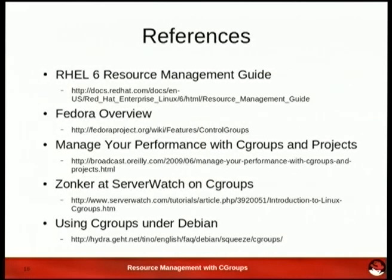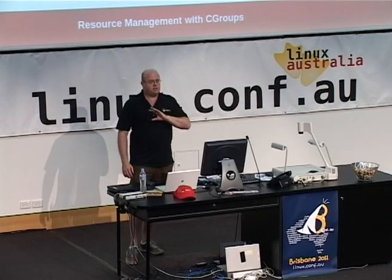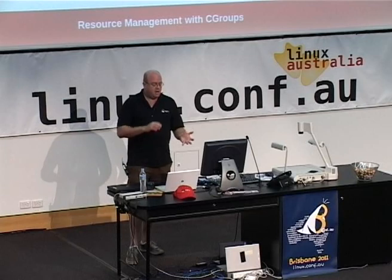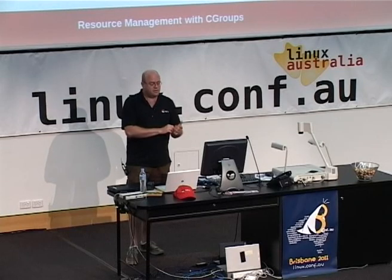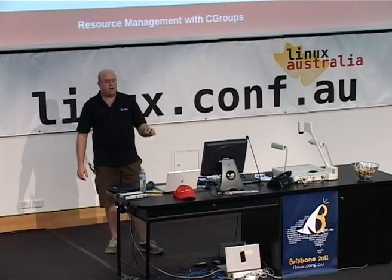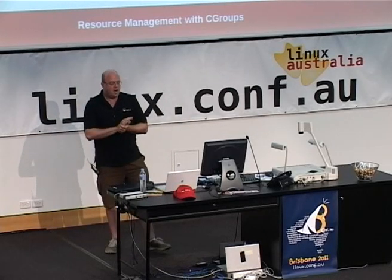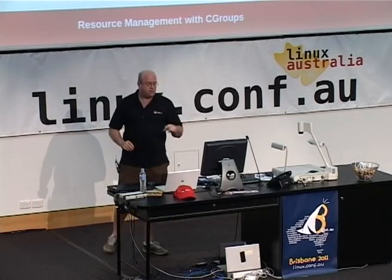If you want to go and have a play, these slides will be available afterwards. RHEL 6 has some great documentation available via Red Hat's website. Fedora's got an overview on the Fedora Project Wiki. Zonk has been doing a series on Cgroups on Server Watch — he's done two articles to date and it's going to be an ongoing series, so that's one to watch. I highly recommend having a look. And if you're using it on Debian or Ubuntu, have a look at the bottom link.